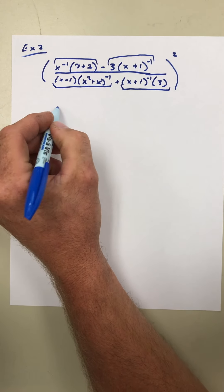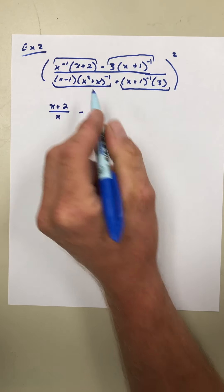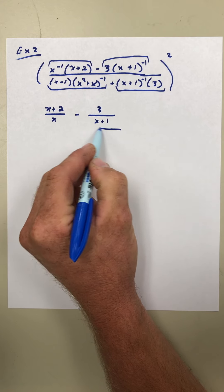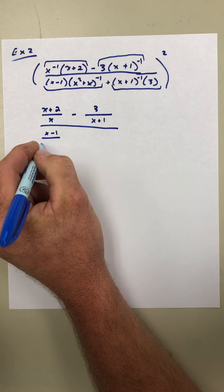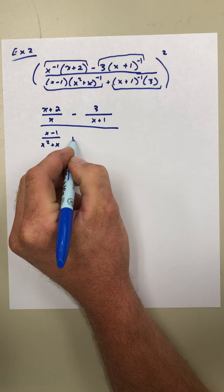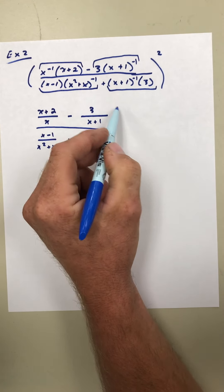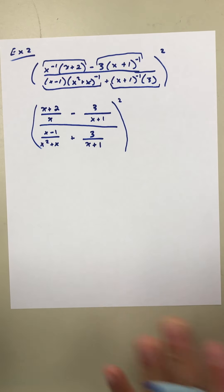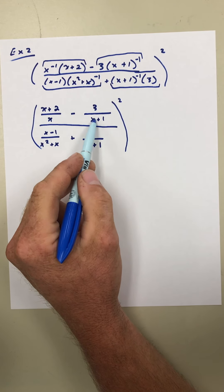Notice we separated the two numerator terms with a minus sign and the bottom terms with a plus sign. To make the exponents positive, we write it as x plus two divided by x, minus three in the numerator, with denominator x plus one. Then over x minus one divided by x squared, plus x plus three divided by x plus one. Now this whole expression is being squared — I'm going to leave that out until the end. We can go ahead and find a common denominator for the numerator.